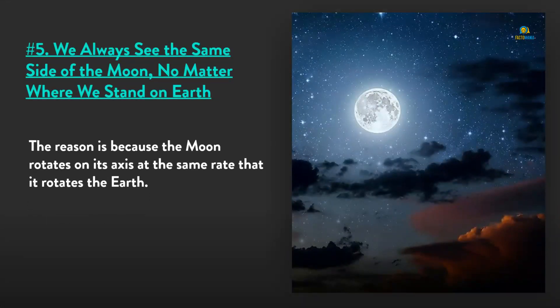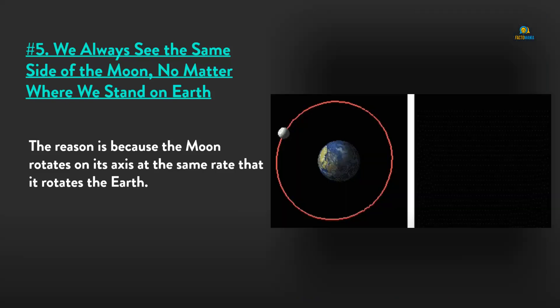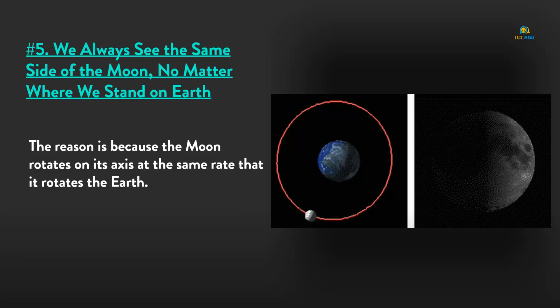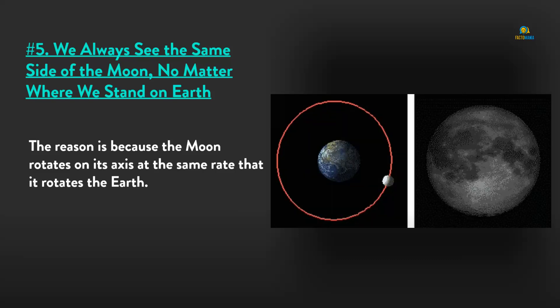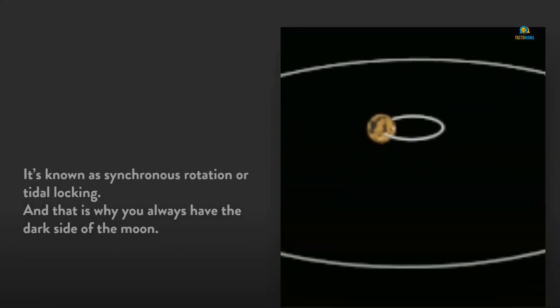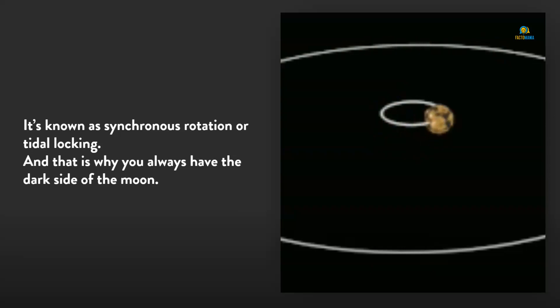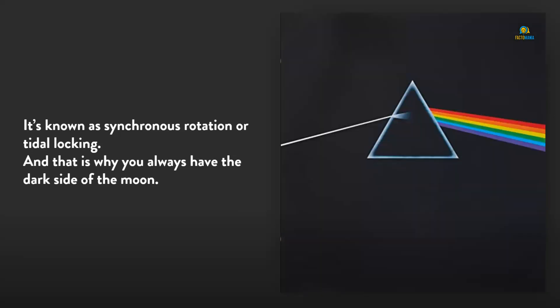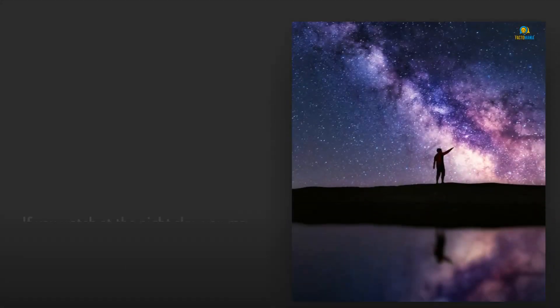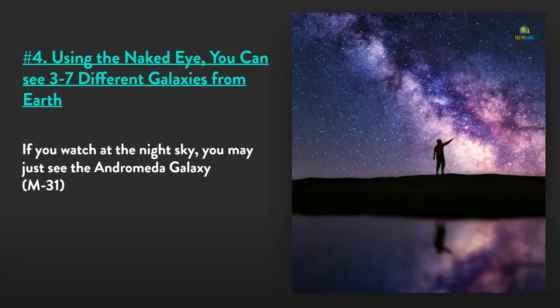Number 5: We always see the same side of the moon. No matter where we stand on Earth, the reason is because the moon rotates on its axis at the same rate that it rotates the Earth. It's known as synchronous rotation or tidal locking. That is why you always have the dark side of the moon.